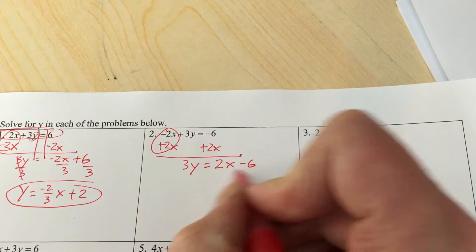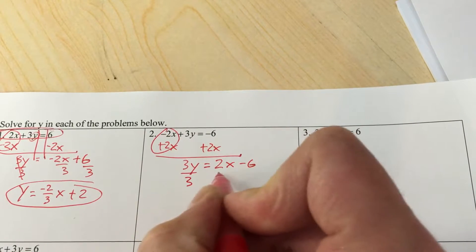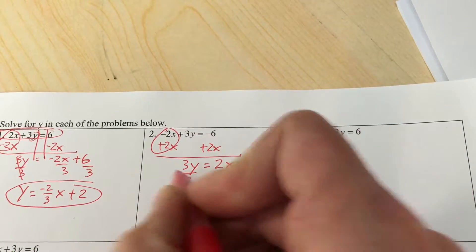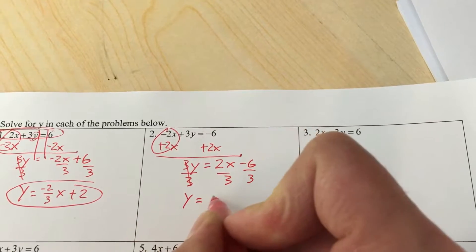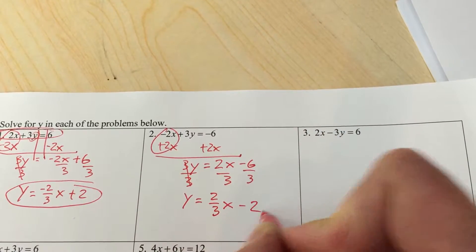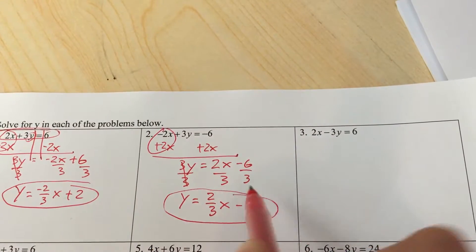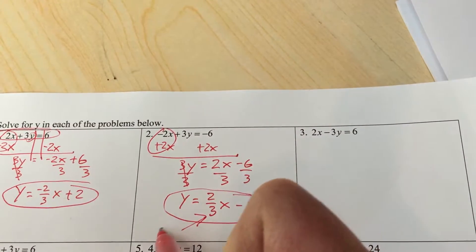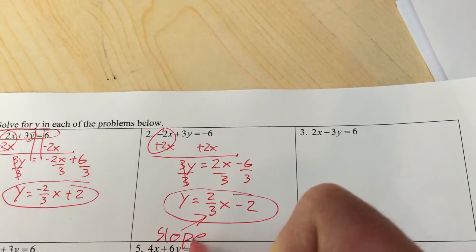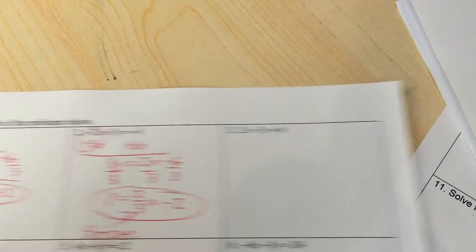Divide by 3 and we have y equals 2/3 x minus 2. You're done. And by the way, this is your slope, your rise over run - how much is y changing over how much is x changing.